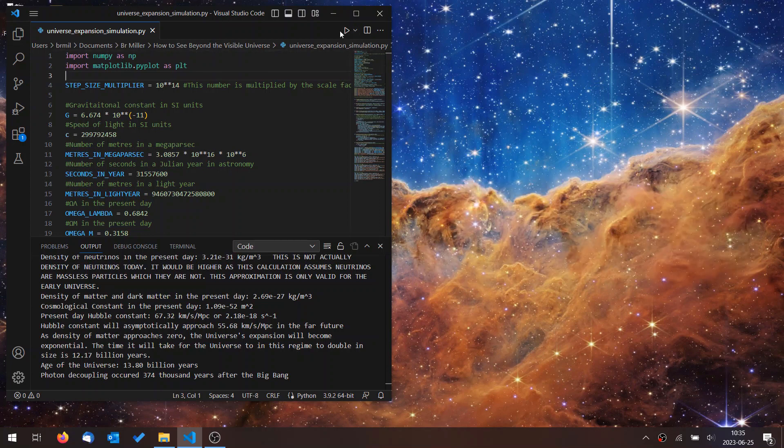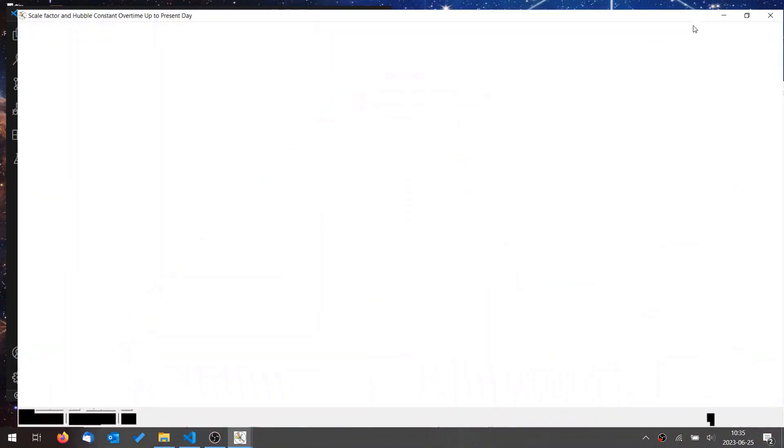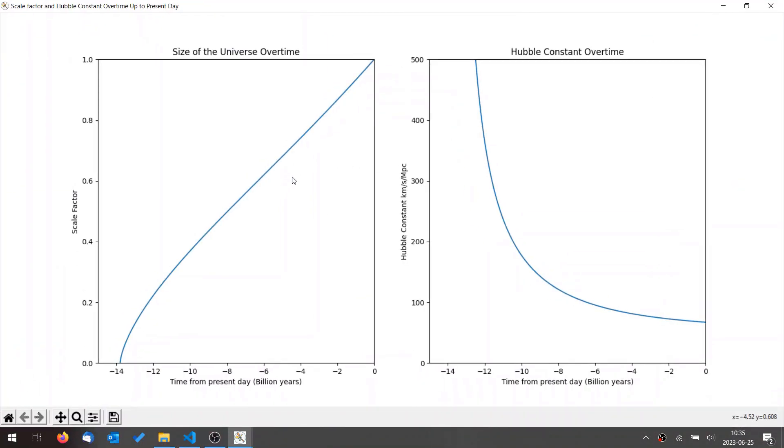So if we run this, we see how the universe has expanded over time. On the x-axis, we have the time from the present day. The numbers are negative because it's going into the past. This is 2 billion years ago, 4 billion years ago, and here is the Big Bang, about 13.8 billion years ago.